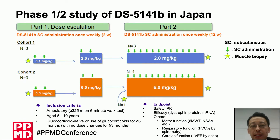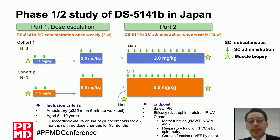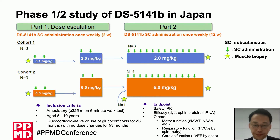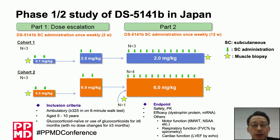We started a first-in-human study in Japan to assess the safety, tolerability, efficacy, and pharmacokinetics of DS5141B given via subcutaneous delivery once weekly. The study was divided into two parts. In Part 1, the dose was gradually increased while confirming safety. In Part 2, based on the safety assessment from Part 1, the same fixed dose was administered once a week for 12 weeks.